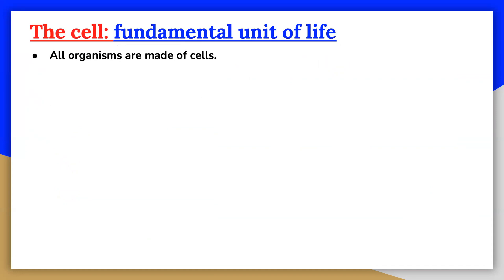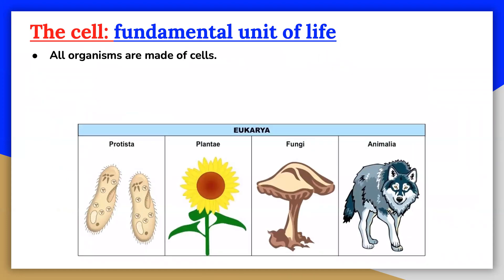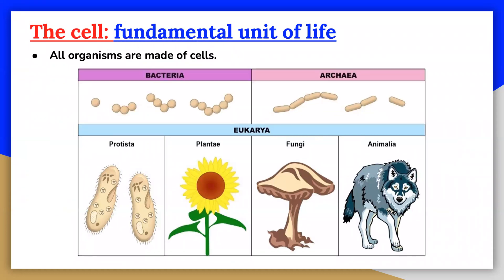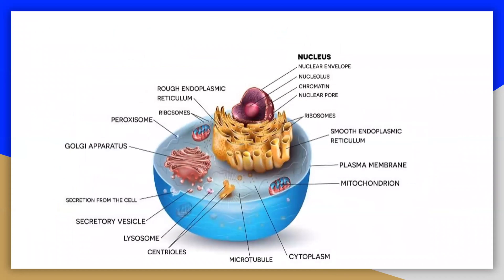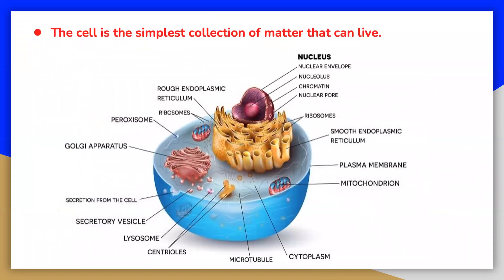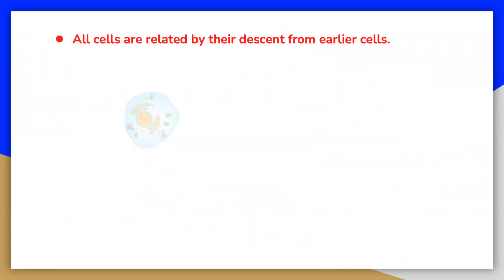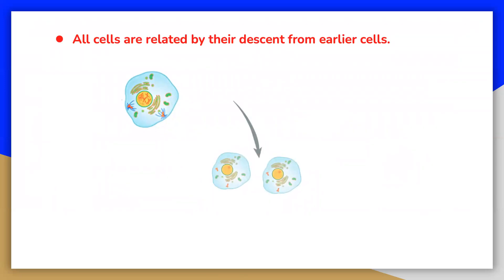Life takes many forms, from giant redwood trees towering hundreds of meters in the air to the tiniest known microbes. The fundamental unit of life is the cell. All organisms contain at least one cell, and cells only come from other cells.